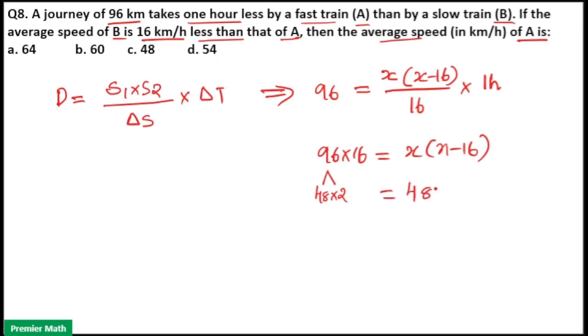So, this can be written as 48 into 32. Here you can see 48 minus 16 is 32. That means SA is equal to 48 and SB is equal to 32.